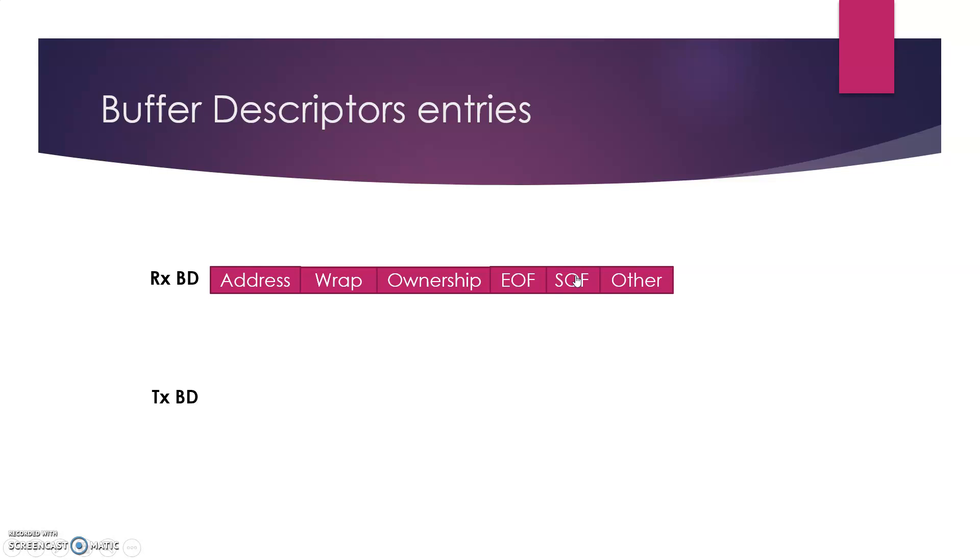Then comes the TxBD. Again, it consists of address. Then there is wrap bit which is similar in functionality to the wrap bit of your receive buffer descriptor. Then there is used bit which is similar to the ownership bit. Which basically means that if it is set, the buffer data is already read or it's used.